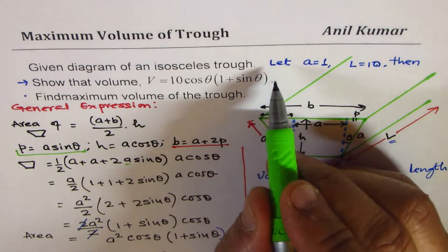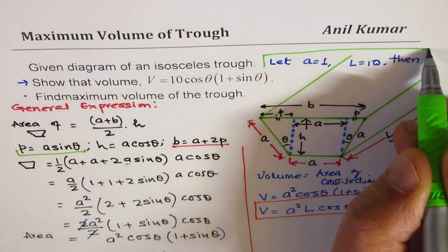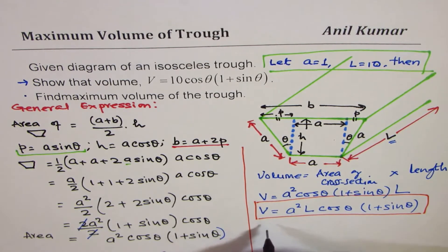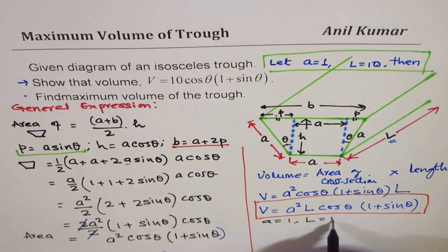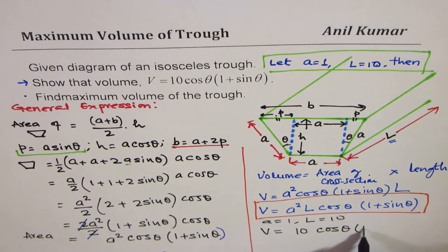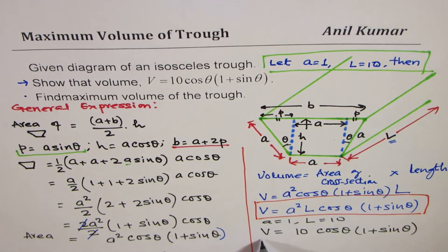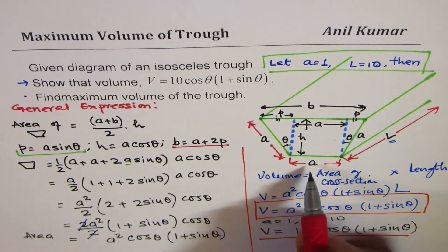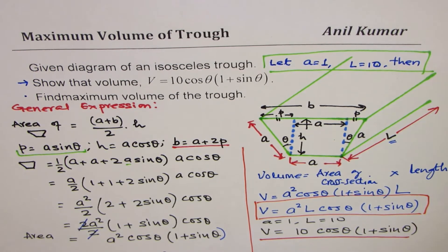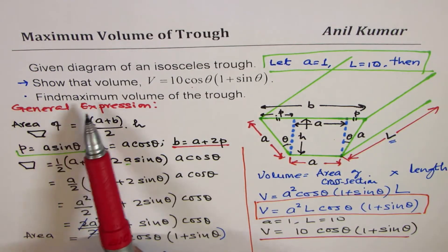Now substituting a equals 1 and L equals 10: V equals 1 squared times 10 times cos theta times (1 plus sin theta), which gives V equals 10 cos theta (1 plus sin theta). That's the required expression for the first part of the question.